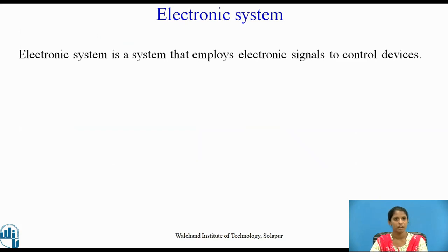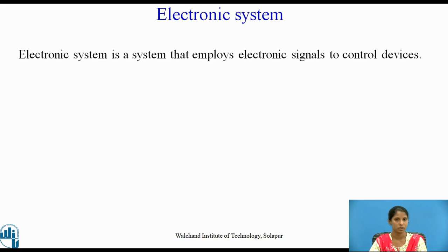An electronic system is a system that employs electronic signals to control devices such as radios, telephones, mobiles, and computers. Input electronic signals are processed to generate control signals which can operate various devices like LCDs and amplifiers. Electronic systems can carry out many operations like monitoring, measuring, transmitting information, calculating, and more. Electronic systems include semi-conducting diodes and capacitors mounted on electronic circuits.